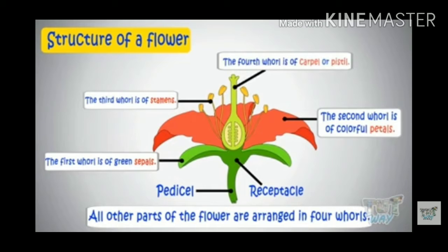So students, now I will discuss the reproductive part of plants, and the reproductive part of a plant is the flower. In the previous class, you all have read about flowers. There are so many parts of a flower. First is a green stalk-like structure which is known as pedicel. Then a swollen part which is known as thalamus.